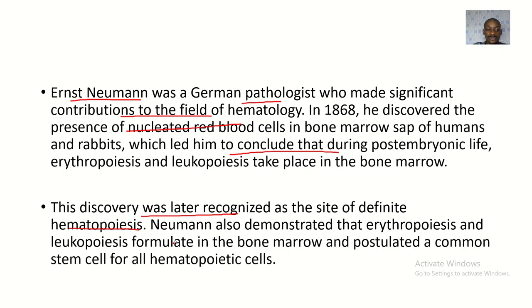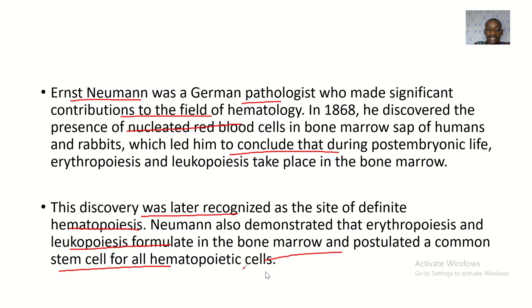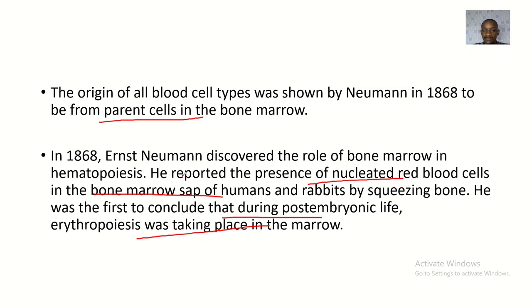Franz Ernst Neumann also demonstrated that erythropoiesis and leukopoiesis occur in the bone marrow and postulated a common stem cell for all hematopoietic cells. He stated that all blood cells actually originate from one parent cell — one primitive hematopoietic stem cell. That foundational idea of a common origin for all blood cell types came from Franz Ernst Neumann.